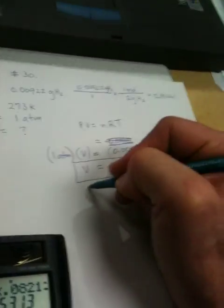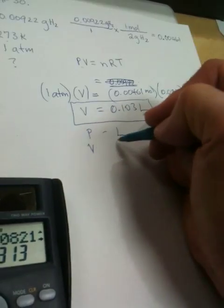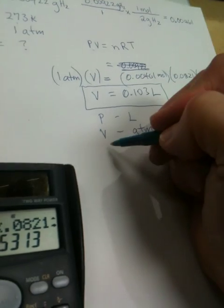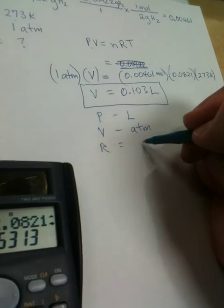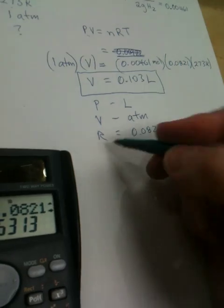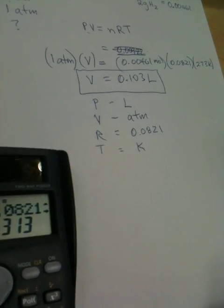whenever I have pressure, that has to be in liters. Whenever I have volume, that has to be in atmospheres when I'm using PV=nRT. R is always going to be equal to 0.0821, and T is always going to be in Kelvin. It can't be in anything else.